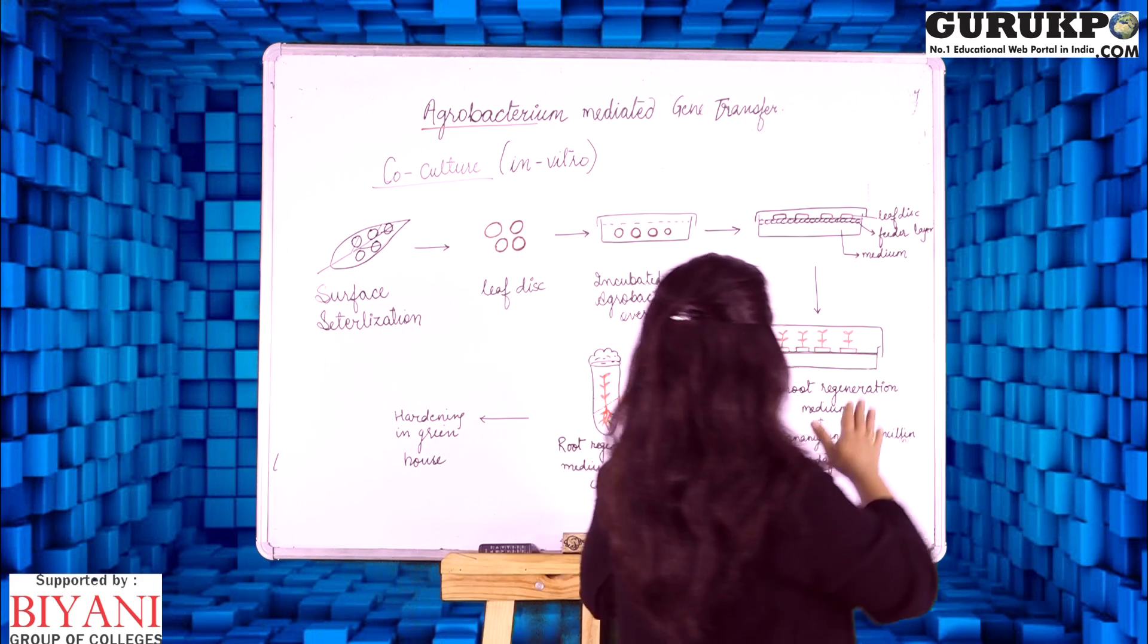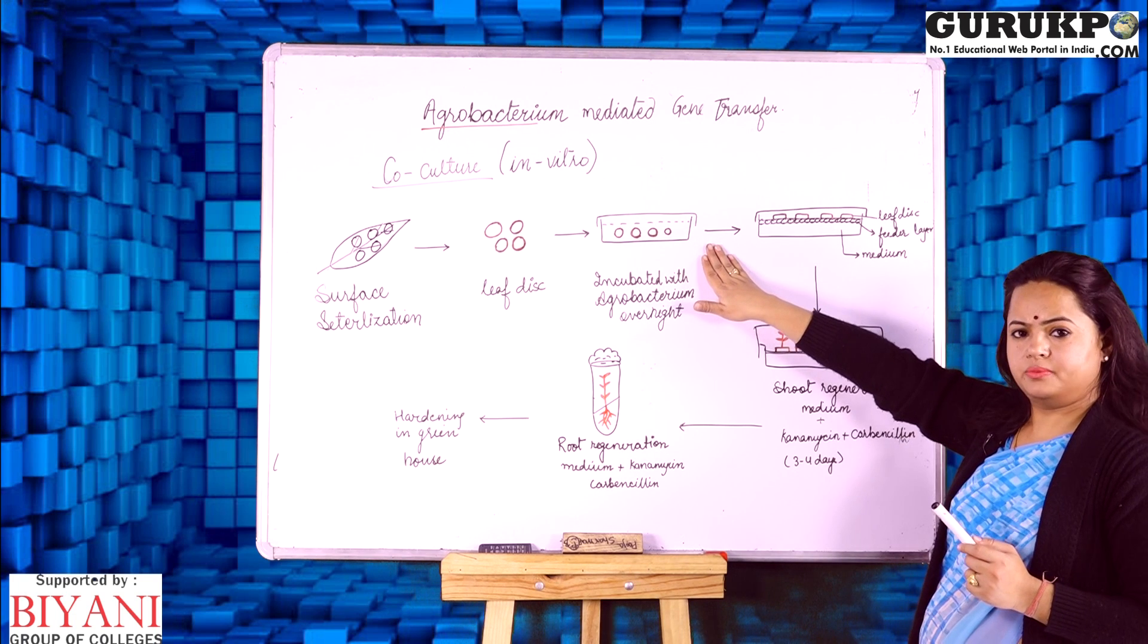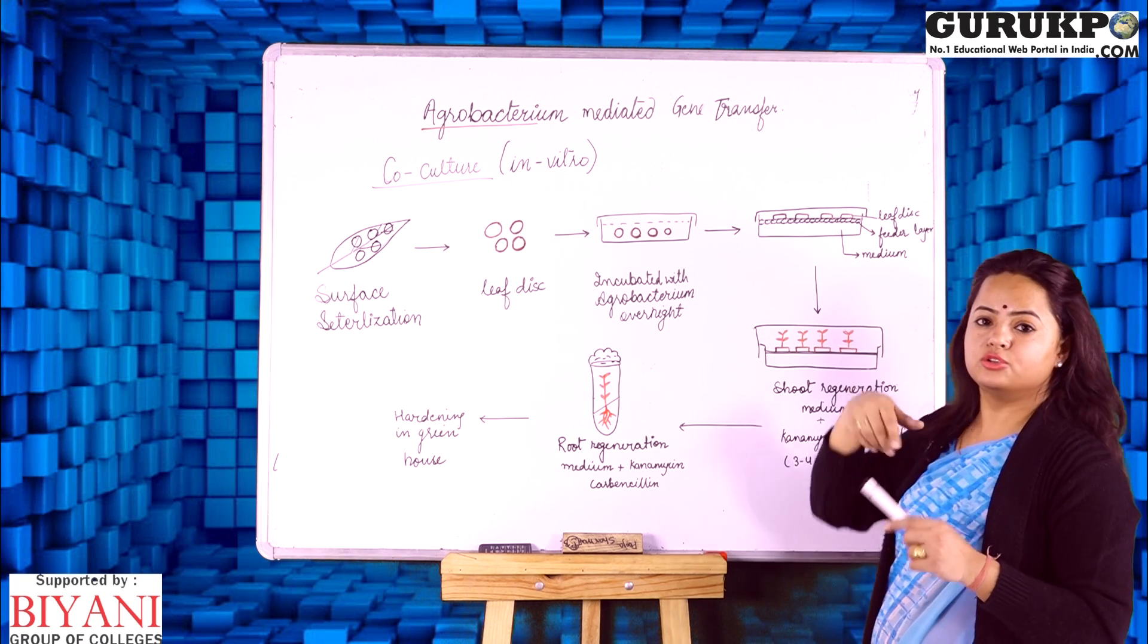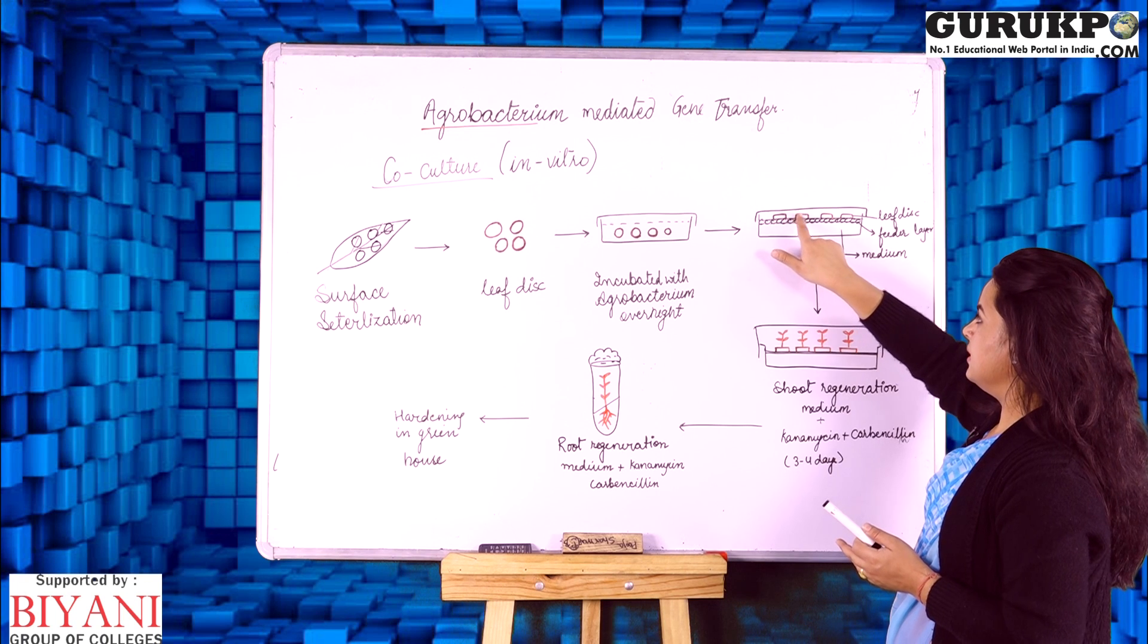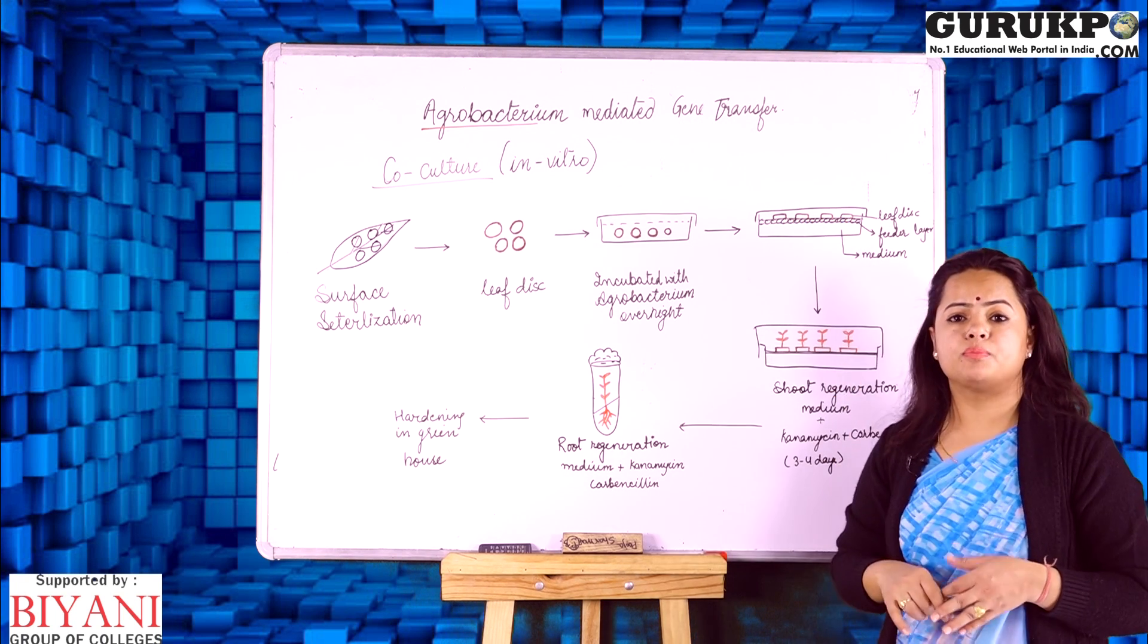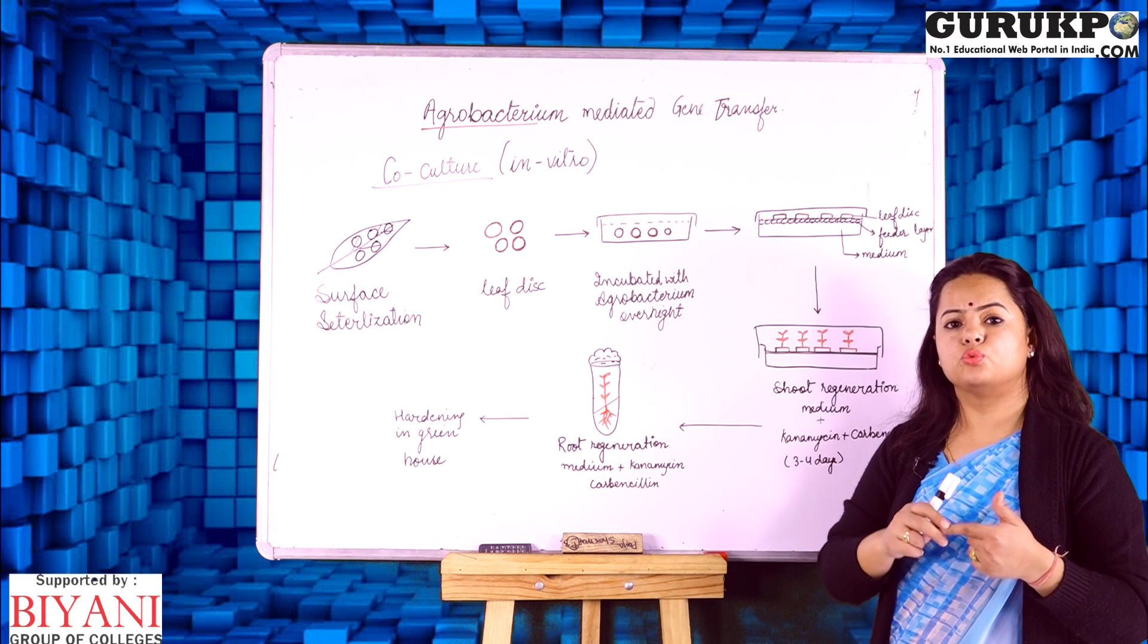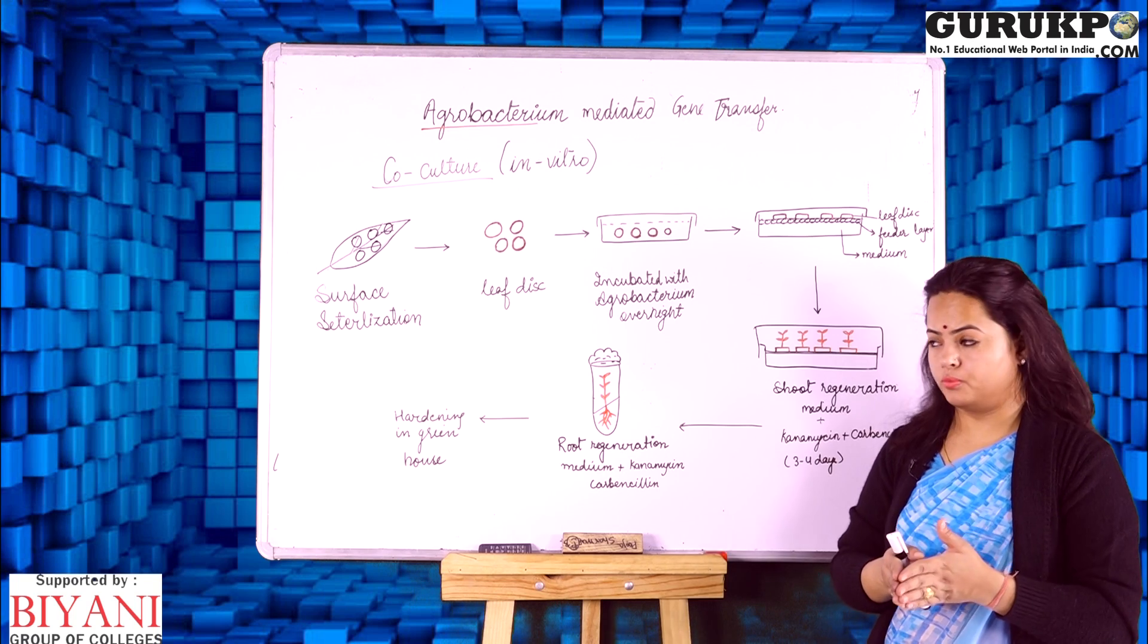Again these leaf discs will be taken out from the suspension medium and could be transferred to a medium which is having a feeder layer. It will act as a nutrient supply and will help these leaf discs to modify themselves. We will use the property of tissue that is totipotency. Every cell has a capacity that it can regenerate itself to a shoot or a root depending on the supply of the hormones.